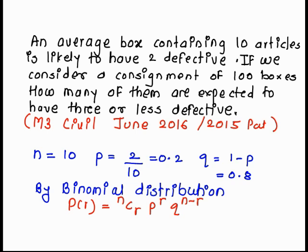Now we want to calculate how many of them are expected to have three or less defective, means we want to calculate the probability for r is less than or equal to three, that is for zero, for one, for two, and for three. So let's start one by one.